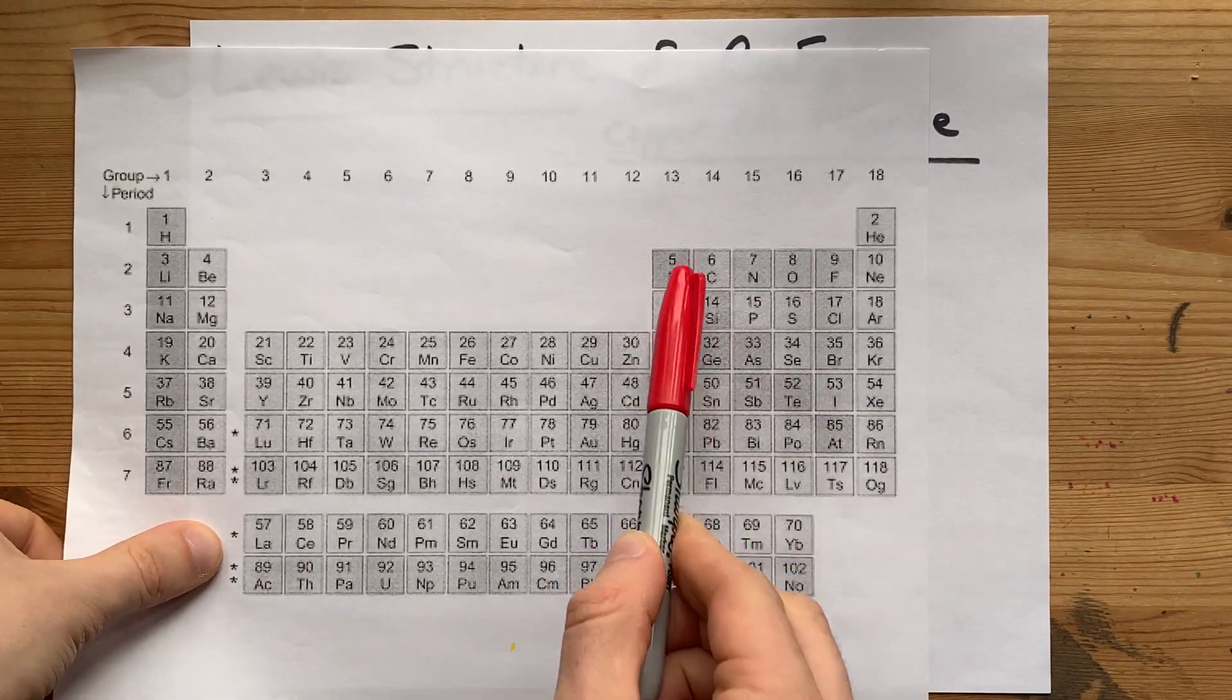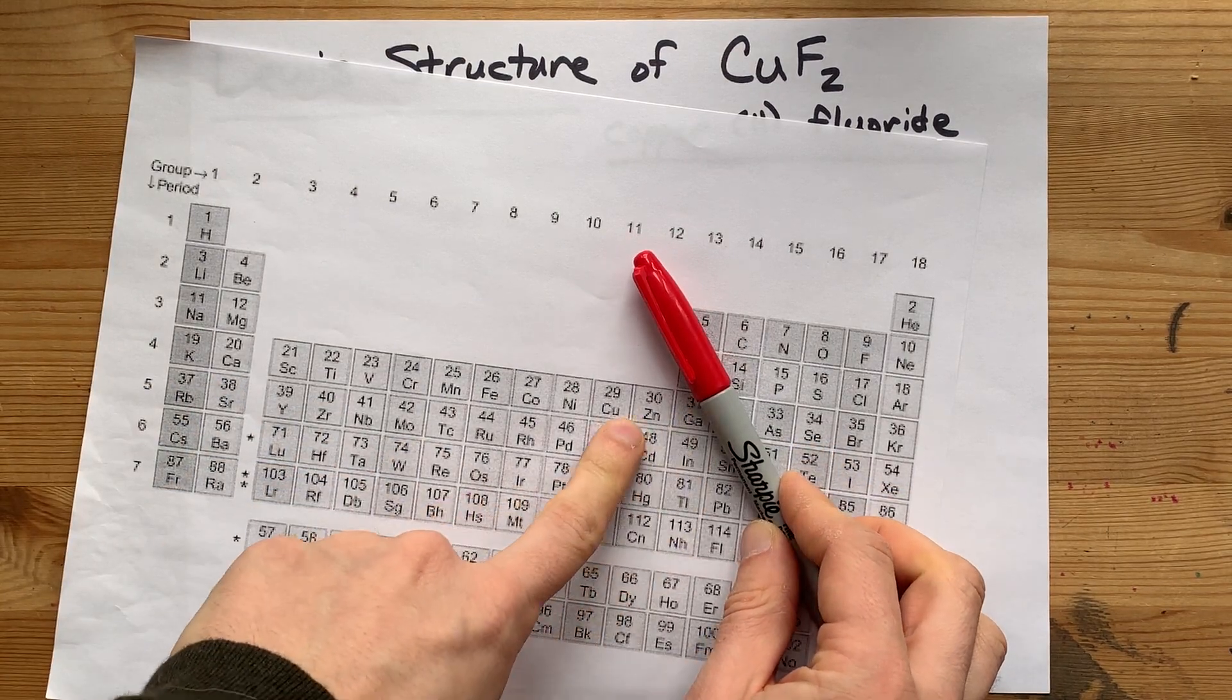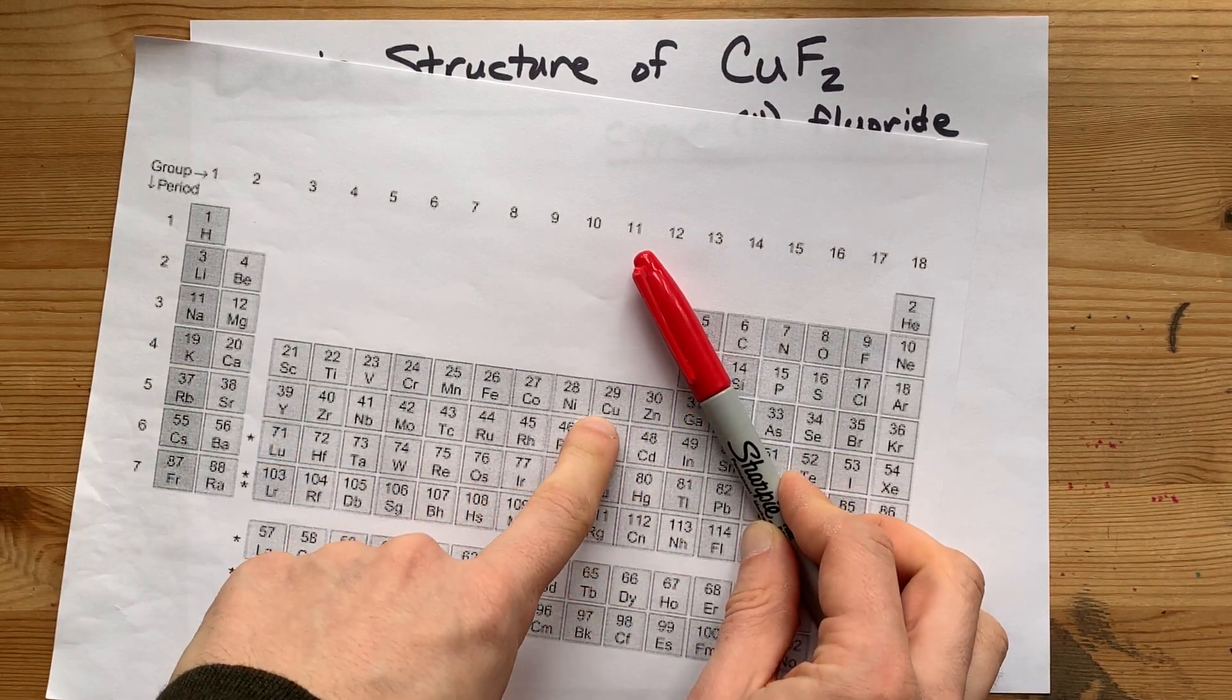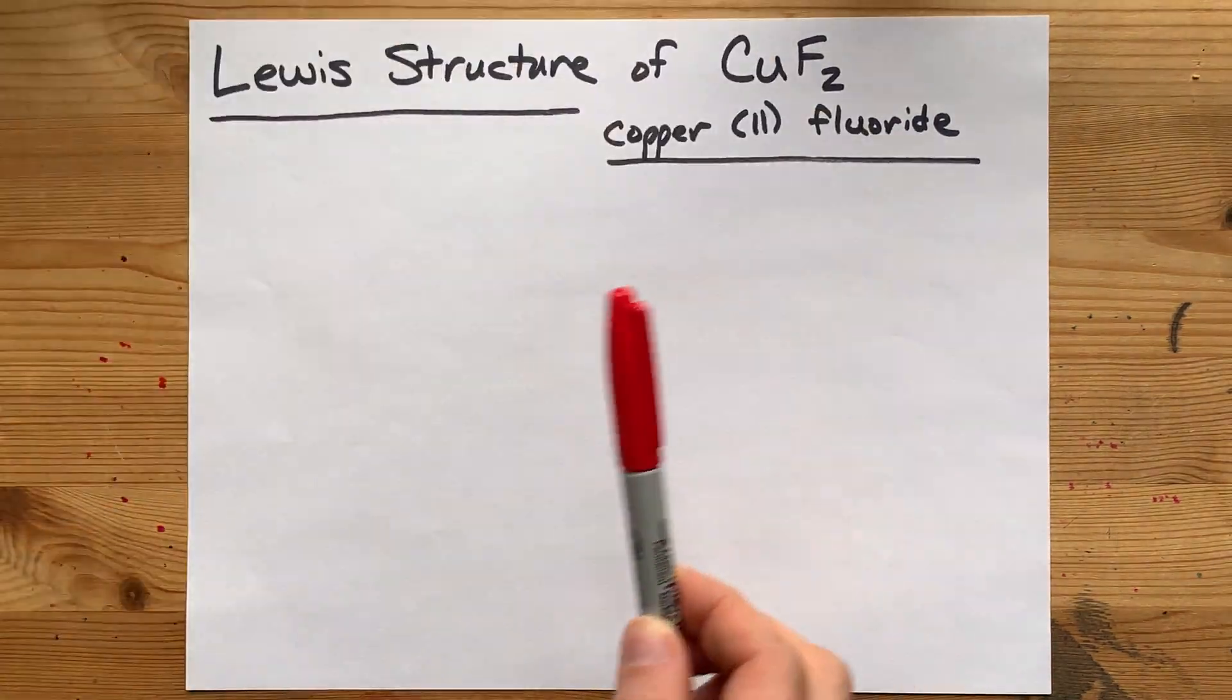Now here we have the staircase of semi-metals on the periodic table. Anything to the left of it, like copper, is a metal. Anything to the right of it, like fluorine, is a non-metal.